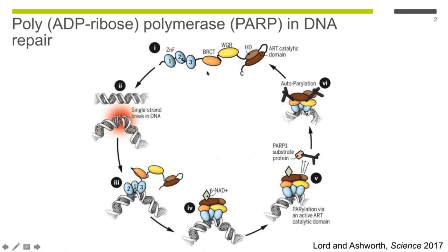PARP's canonical role in DNA repair is as a sensor of single-stranded DNA damage. PARP1 binds extremely fast to sites of single-stranded DNA breaks — within milliseconds. The zinc finger domains assemble on the site of the break, and then the rest of the domains of PARP1 fold up, inducing a conformational change in the helical domain that activates PARP1. PARP1 then binds its substrate, beta-NAD, and starts to produce PAR polymers — poly-ADP ribose — on its substrate proteins such as XRCC1.